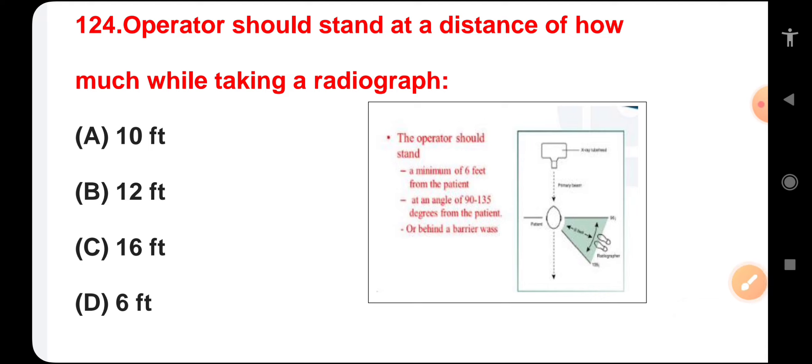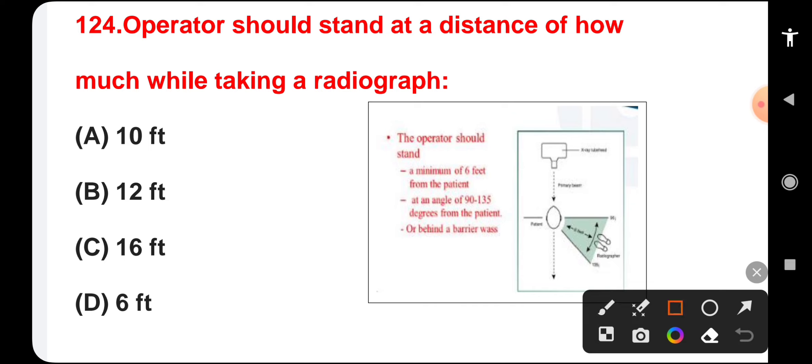Operator should stand at a distance of how much while taking a radiograph? 10 feet, 12 feet, 16 feet, or 6 feet. The correct answer is 6 feet. The operator should stand a minimum of 6 feet from the patient at an angle of 90 to 135 degrees from the patient or behind a barrier.